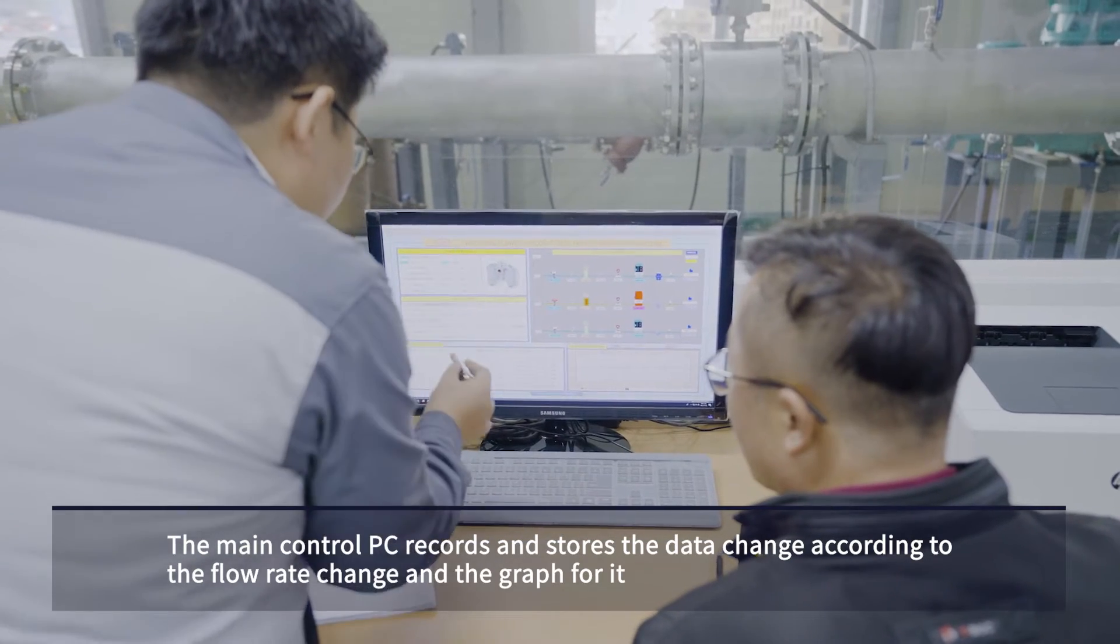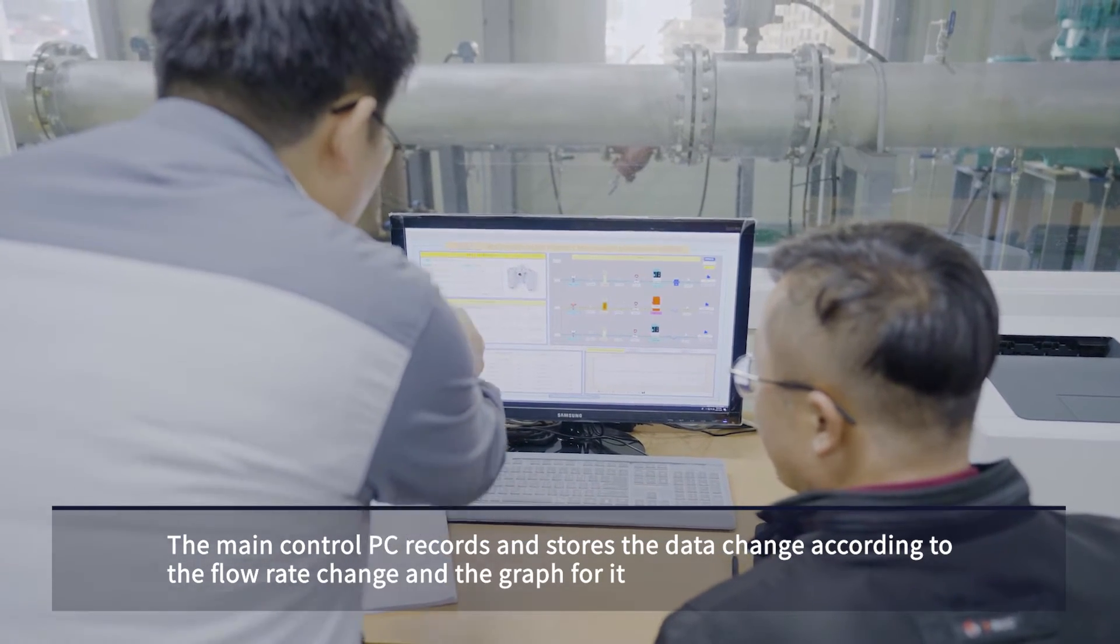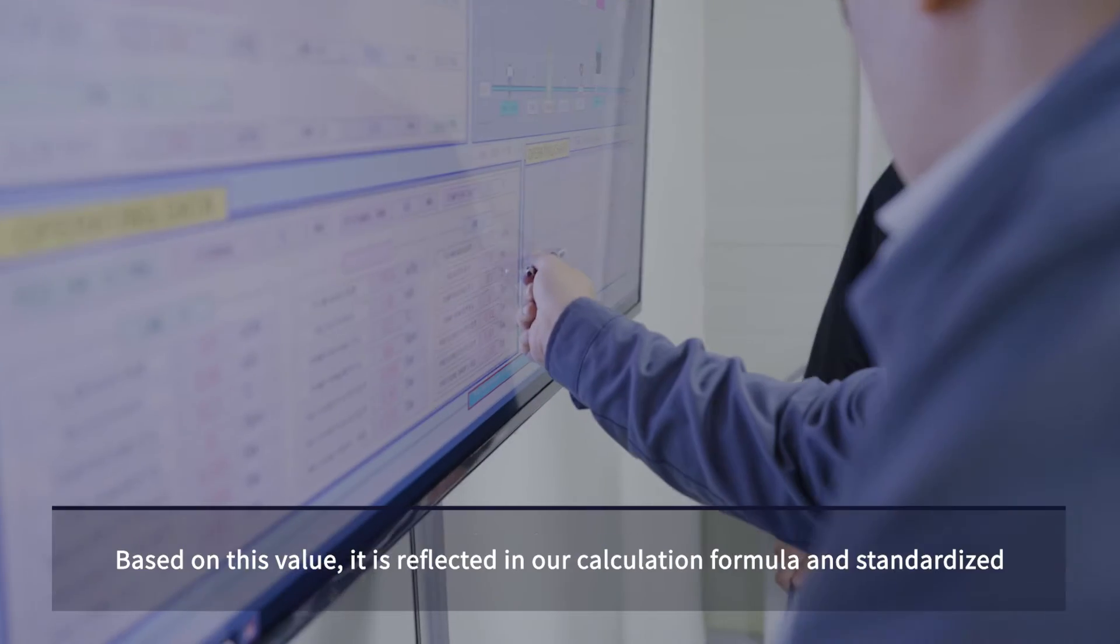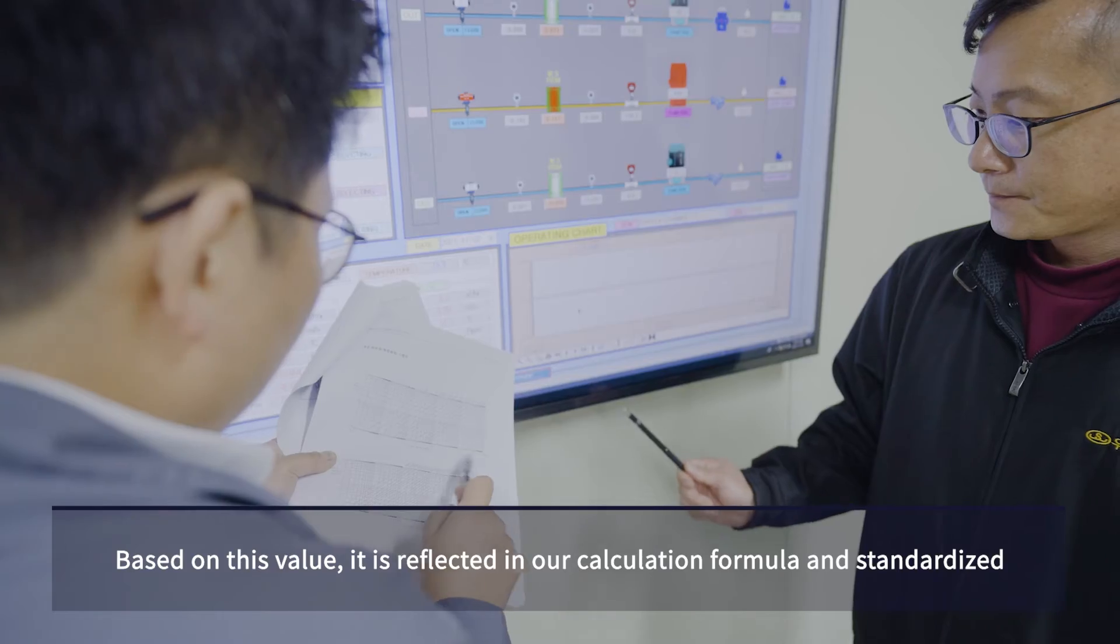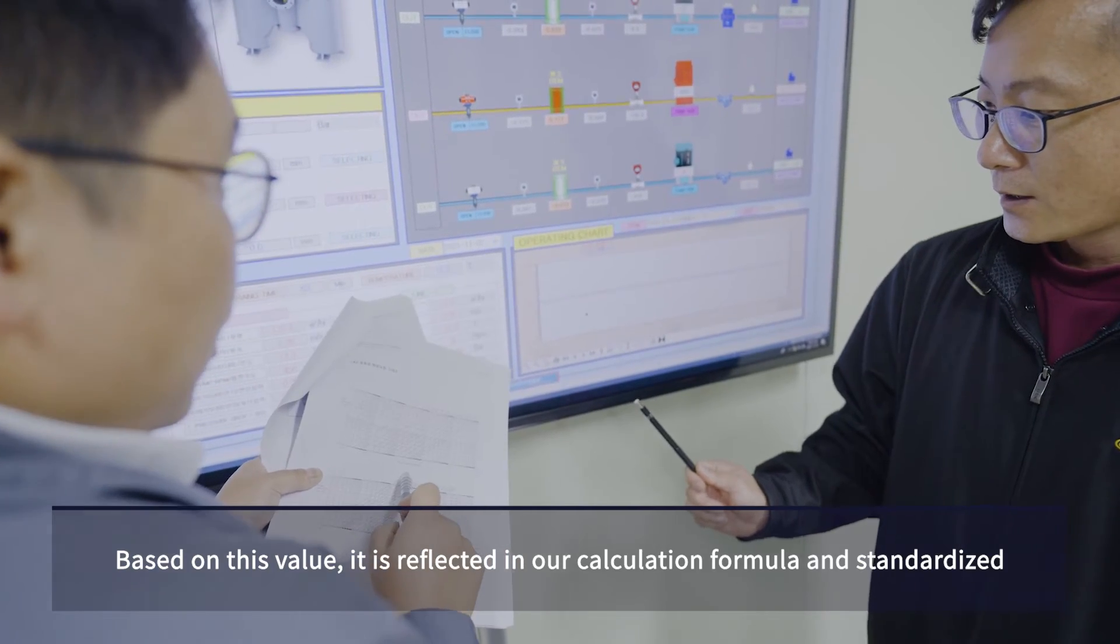The main control PC records and stores the data change according to the flow rate change in the graph. Based on this value, it is reflected in our calculation formula and standardized.